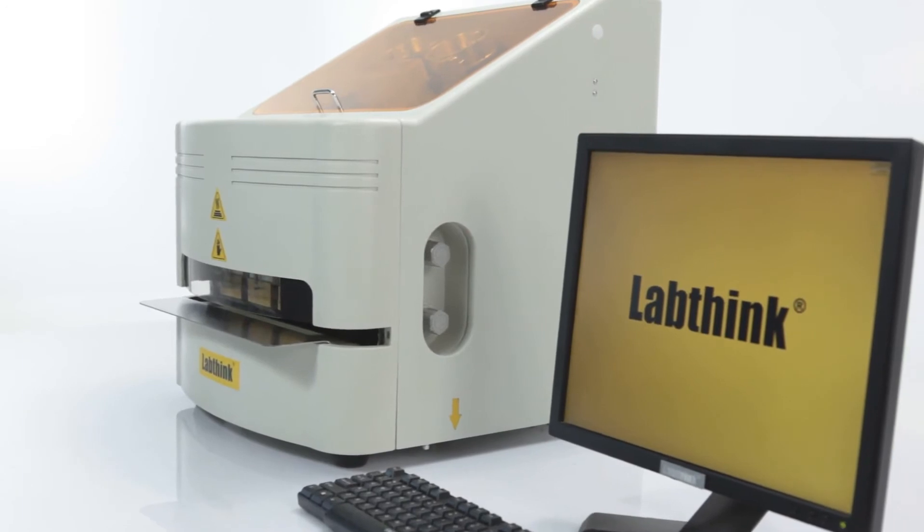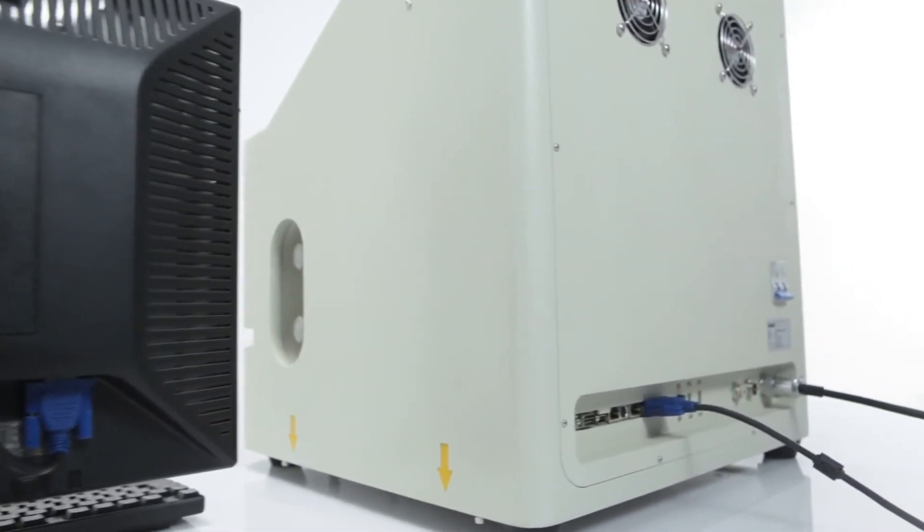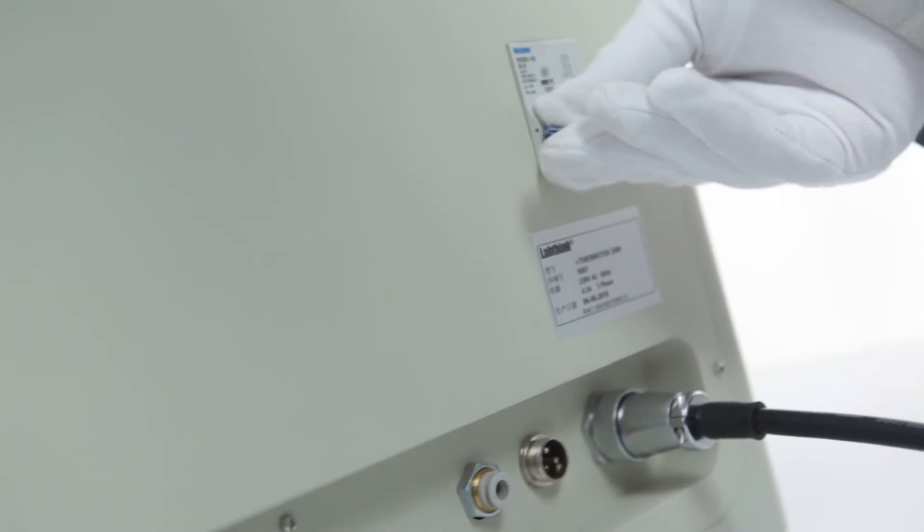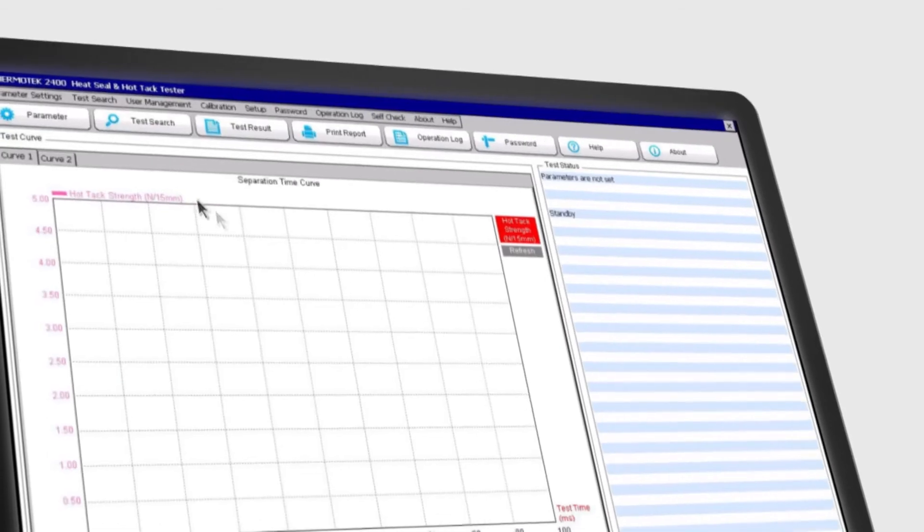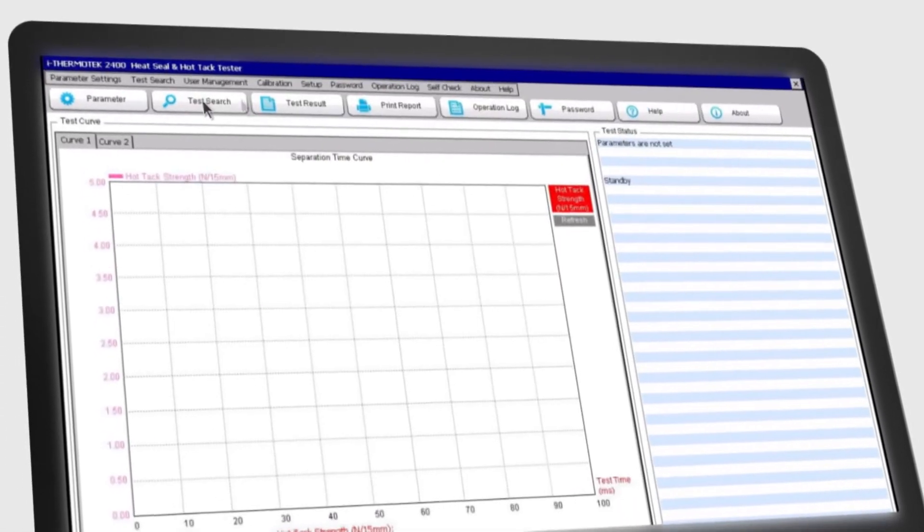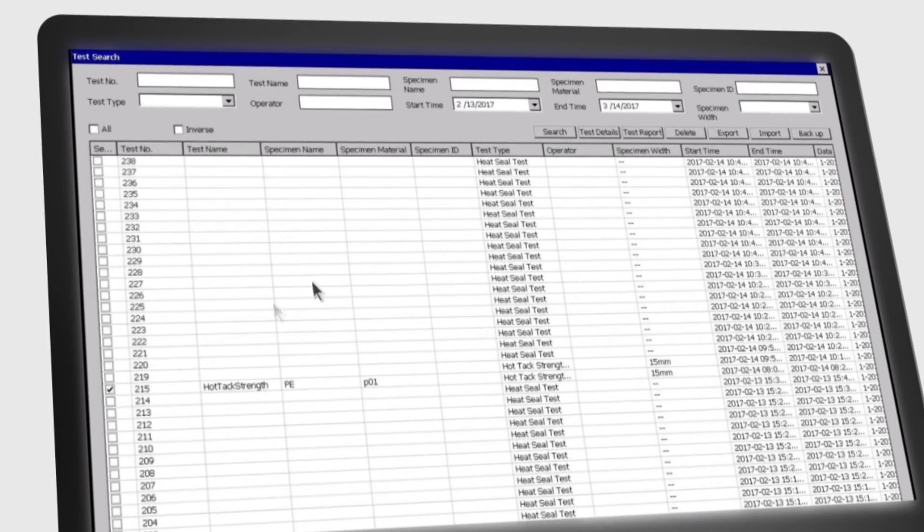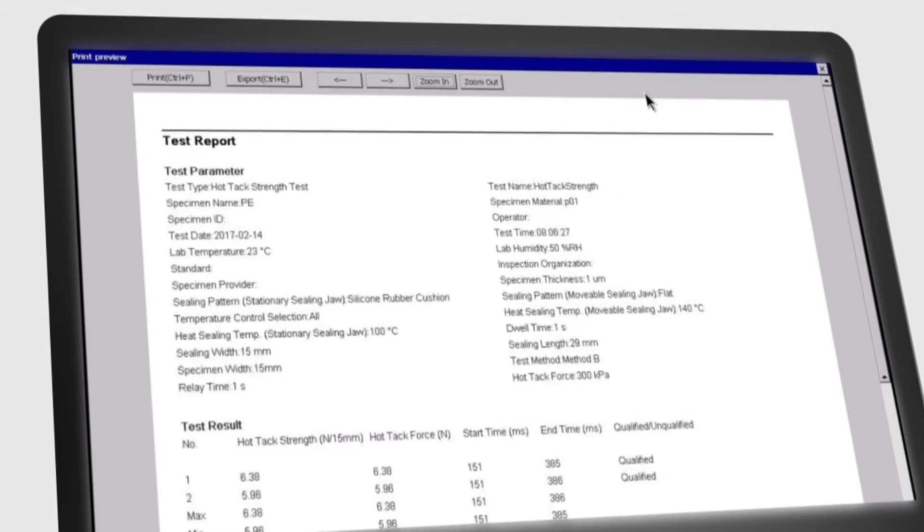i-Thermotech 2400 is embedded with computer control system which ensures the flexibility of instrument operation and improves the reliability of operation and data management. The instrument supports data storage in different formats as well as data inquiry, data compression, data analysis and printing that can facilitate users with data transfer and statistical analysis.